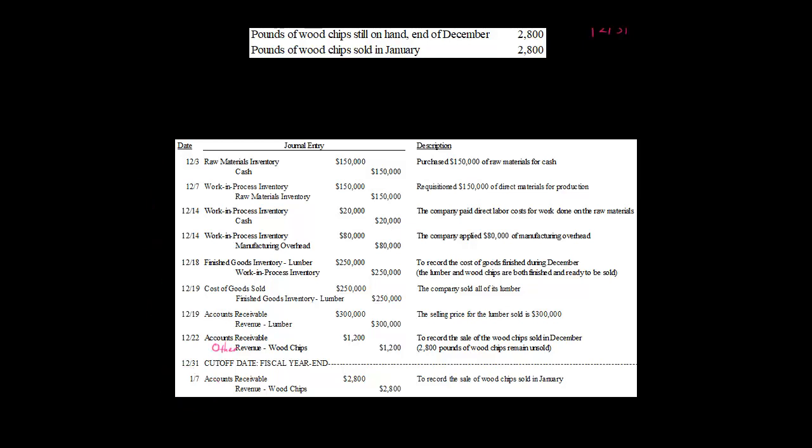Why does this matter? Because a company could use this as a means of earnings management. If you have a bunch of wood chips or some other byproducts sitting around, there's no income statement effect until you actually sell the byproduct. So if you're having a tough quarter, you sell the byproduct and get that boost to your company's profit. The income statement effect is that we don't have any journal entry at all for wood chips until we actually sell them, and when we do sell them, we record other revenue.